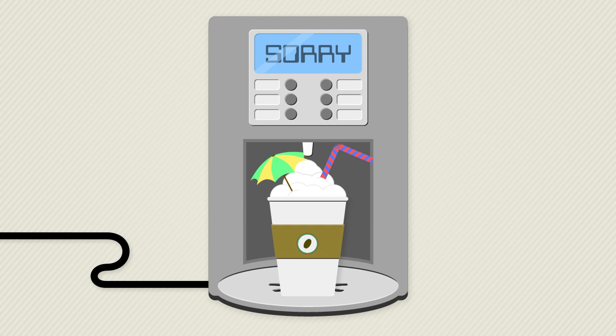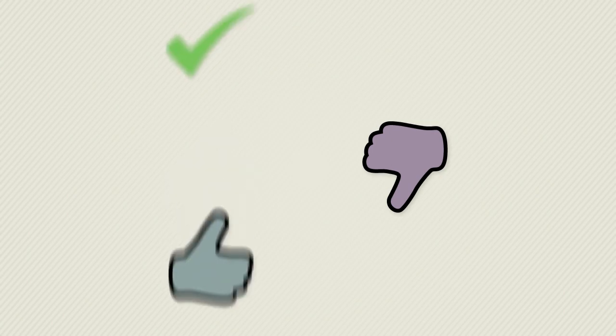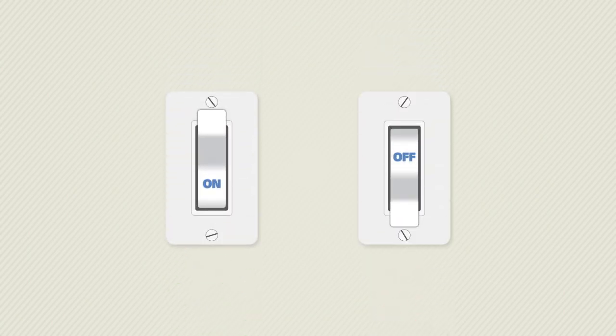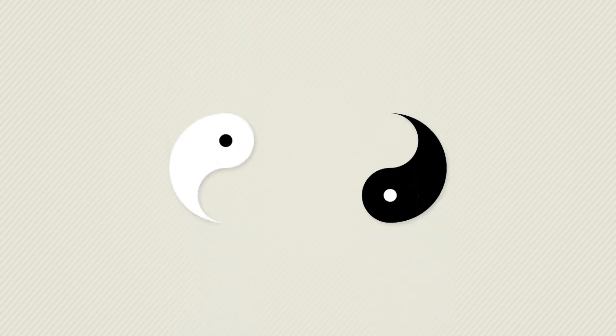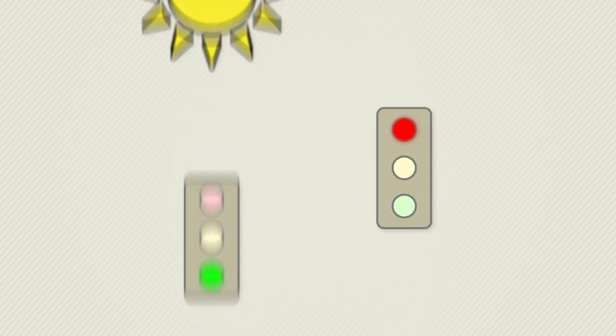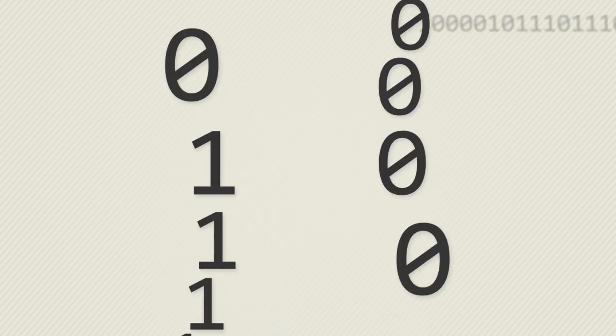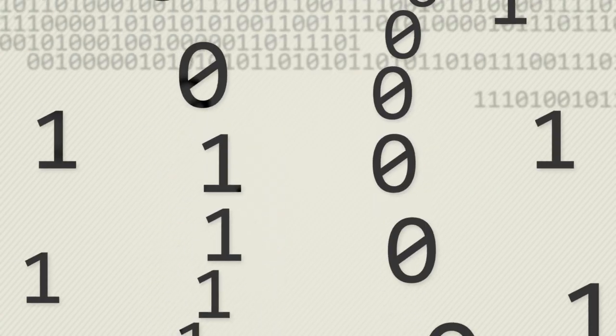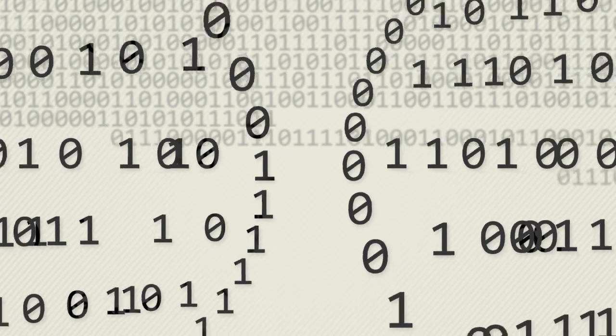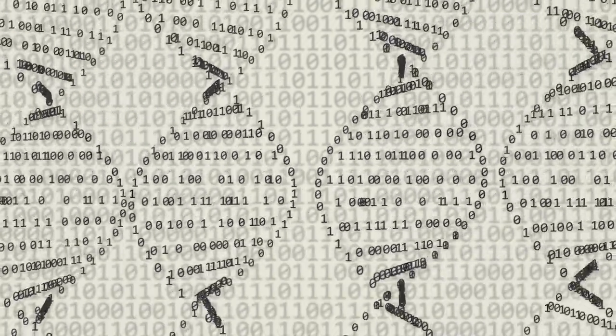Computers work on binary logic. Everything is either a 1 or a 0, a yes or a no, true or false, on or off. But a single binary relationship is like one atom in the complicated DNA of a piece of code. It's a long way to go from just yes to yes, I'd like some coffee now.